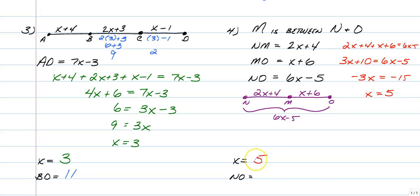Now that we know that X is equal to 5, to find the length of NO, you could plug it into both of these and add them together, or you can just substitute it in for the X in NO. So to do that, it would just be 6 times 5 minus 5, which is going to give us 25. So that's that.